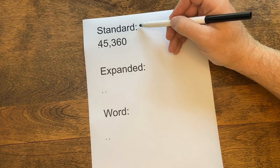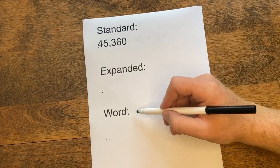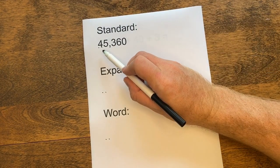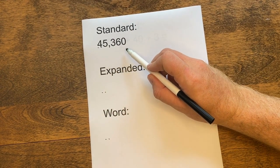The three forms of a number are standard, expanded, and word. In standard form, we just write out the numbers in their place value spots.